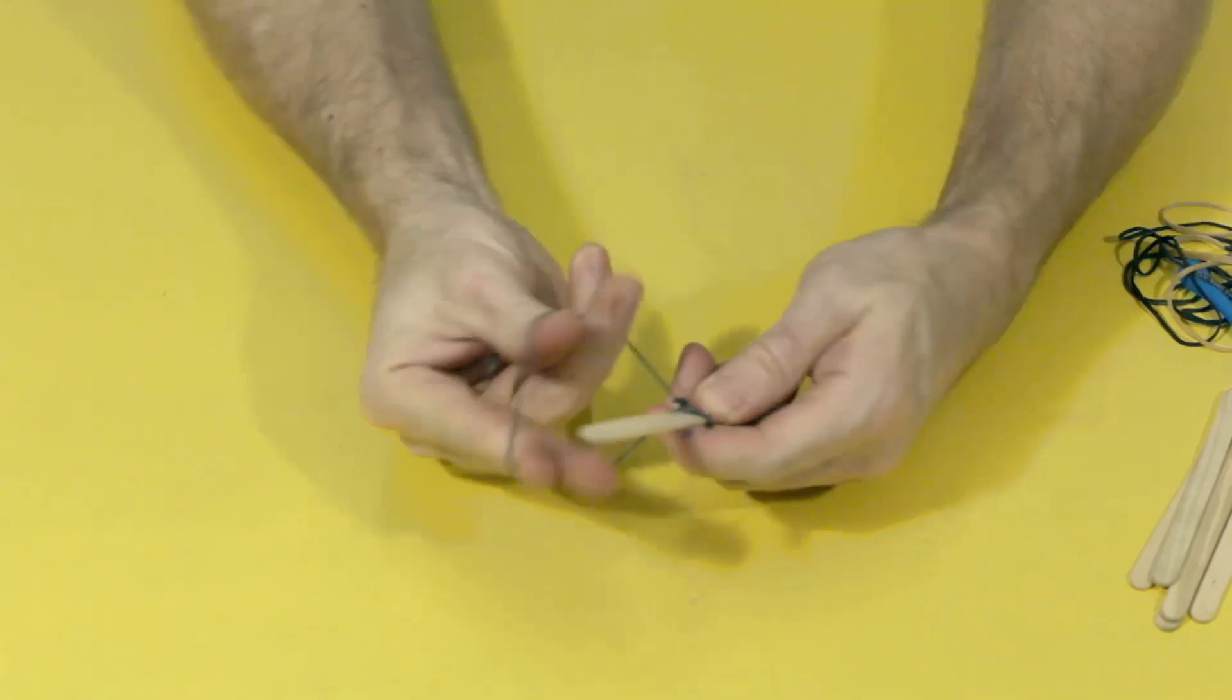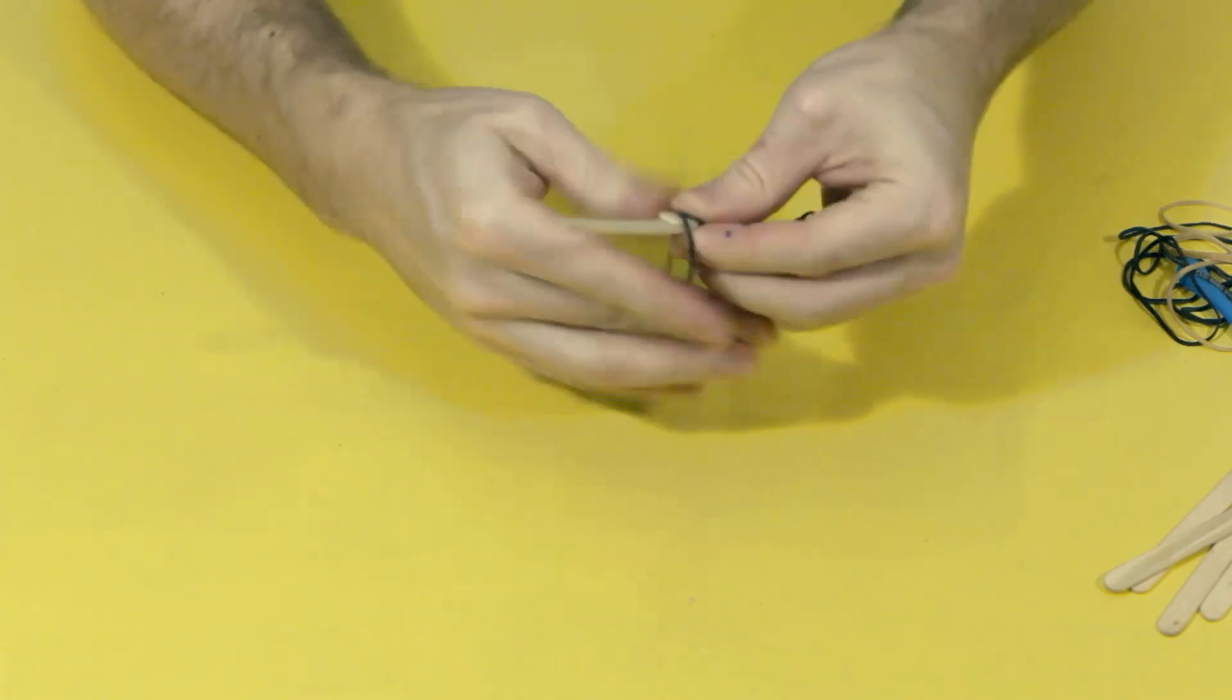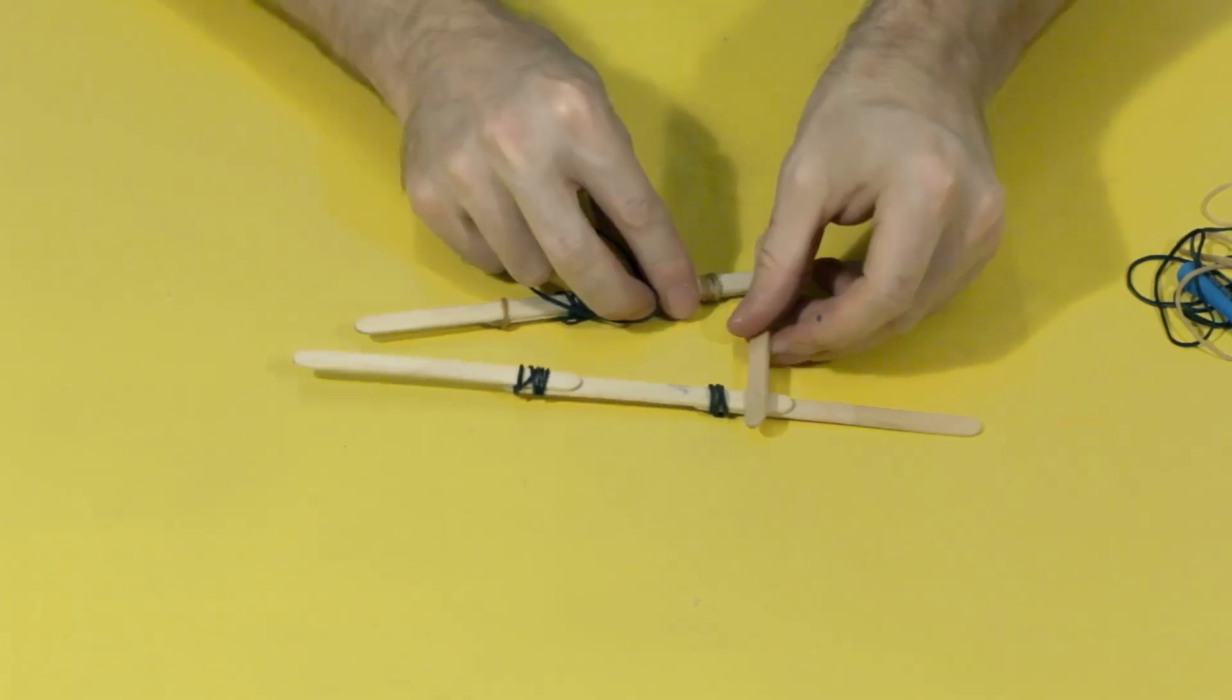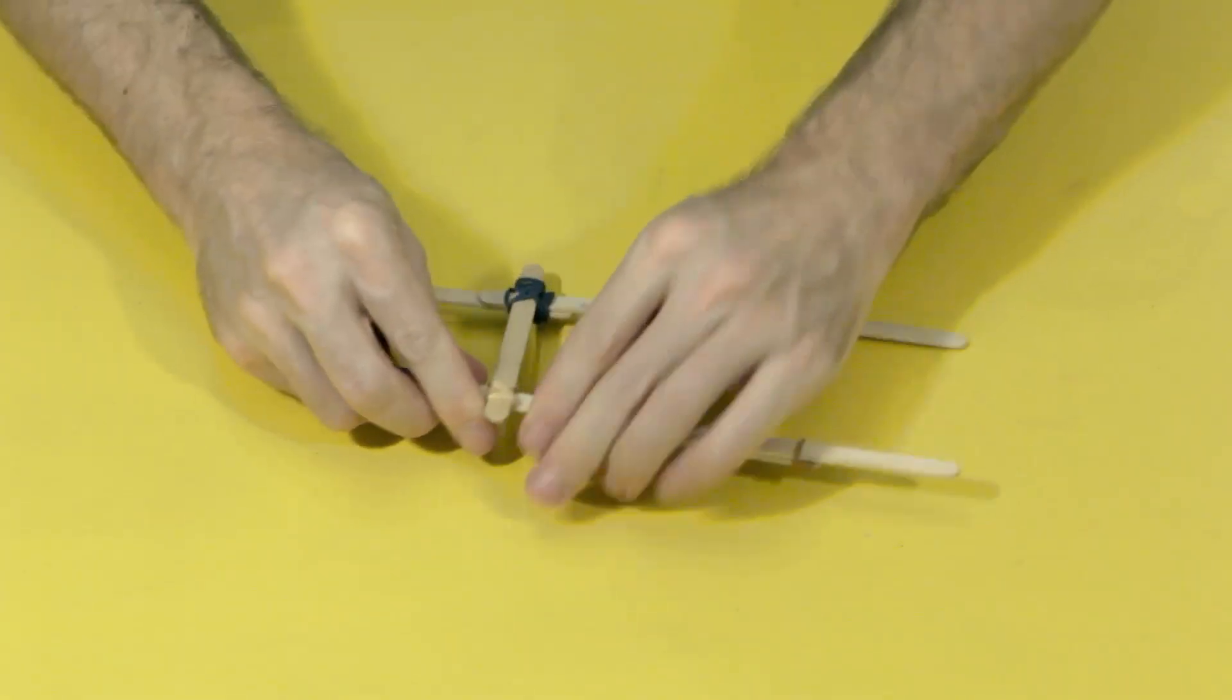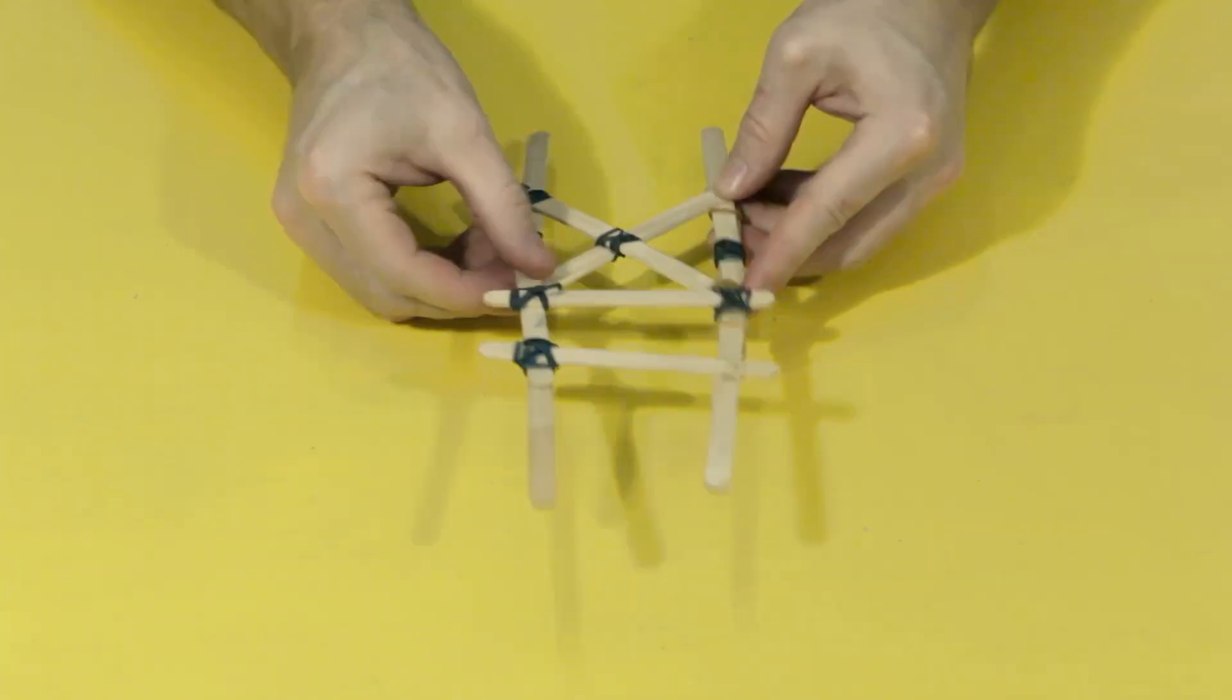Then it's time to make the frame of the dragster using popsicle sticks and elastics. Put two popsicle sticks together, then wrap the elastic band around them to keep them together. Build one side, then the other side, then add some pieces across the middle to give it support. Remember not to put any popsicle sticks too near the ends because they'll get in the way of your wheels.